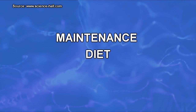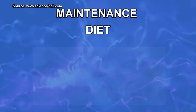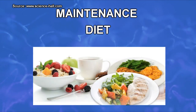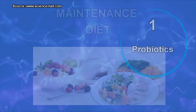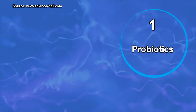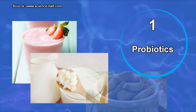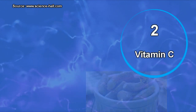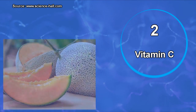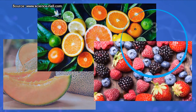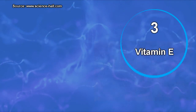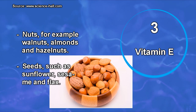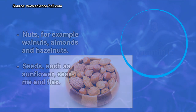To avoid recurrences after basic treatment, it is recommended to eat at least three meals a day and consume the following foods regularly: 1. Probiotics — found in yogurt, kefir, and sweet-and-sour cucumbers. 2. Vitamin C — found in melon, citrus fruits, berries, and broccoli. 3. Vitamin E — found in nuts such as walnuts, almonds, and hazelnuts, and seeds such as sunflower, sesame, and flax.